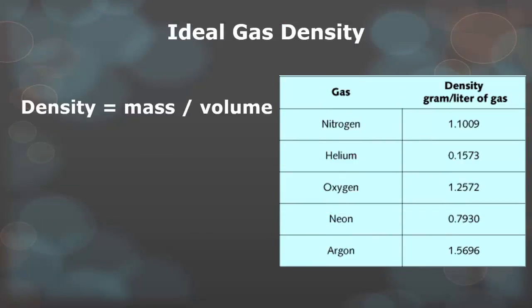We can also use this to determine density of ideal gases. So if you recall, density is equal to mass divided by volume. Density of a gas can be determined by pressure multiplied by the molar mass divided by the ideal gas constant times temperature.